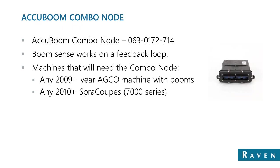The AccuBoom combo node is used mainly on AGCO machines. There is a combo node setting in AccuBoom settings for both Invisio Pro and Viper Pro — only check this when running AGCO machines. The AccuBoom sends a signal to the boom valve, which sends a signal back to the boom speed node. When the field computer receives that signal, it starts painting on the screen. Only use this setting on AGCO machines running an AccuBoom combo node with a part number ending in 714.